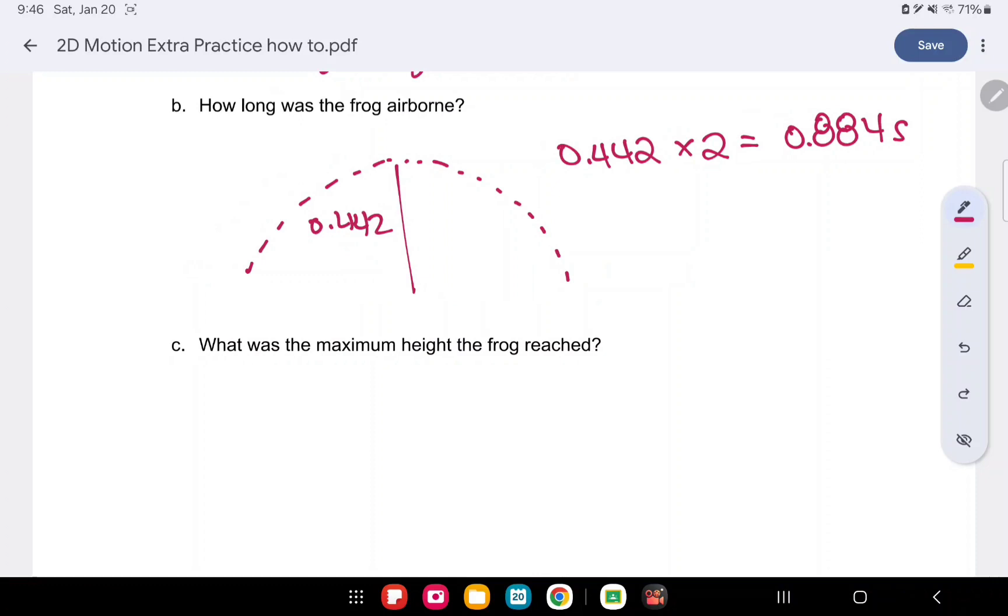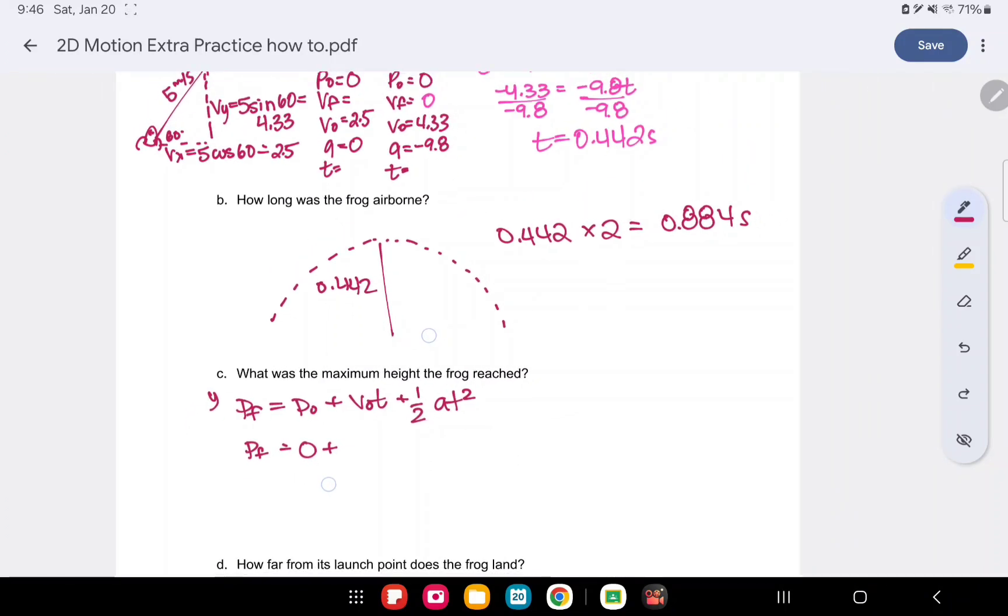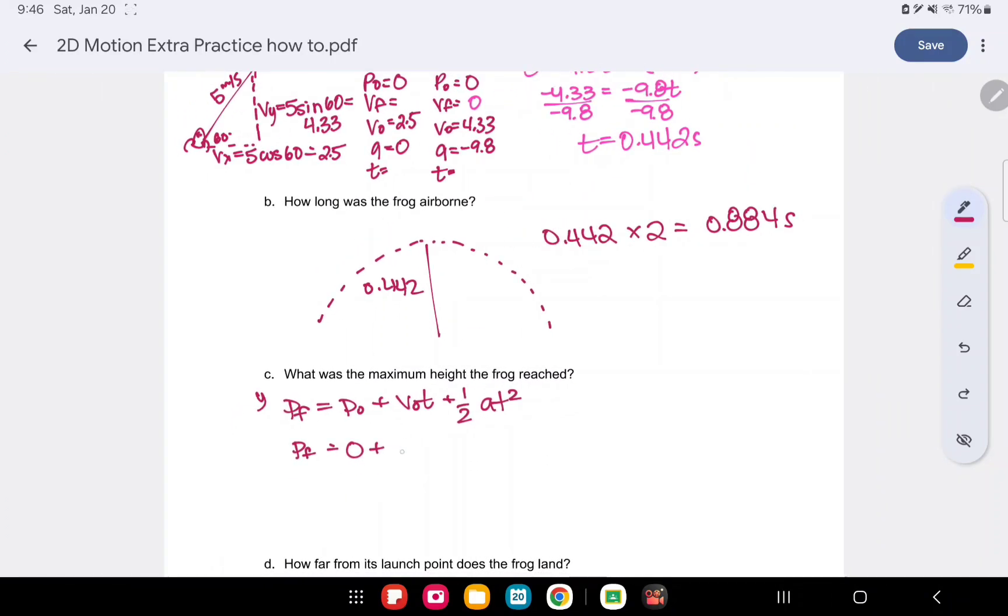So now we can use our pf equation. So pf equals p0 plus v0t plus 1 half at squared. We are looking about height. So we're going to use y. Pf is what we're looking for. We know it started on the ground. We also know the y velocity was 4.33.